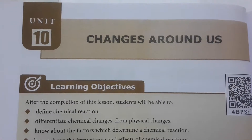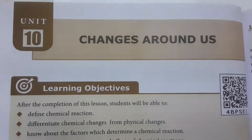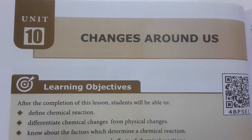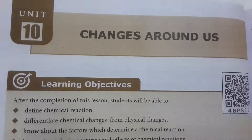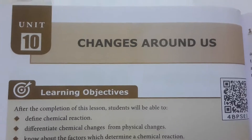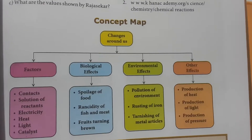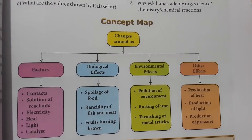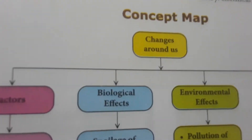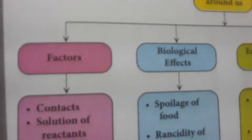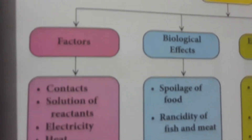Today we are going to see the book back evaluations from standard 8 Science book, Unit: Changes Around Us. This is a concept map for the lesson. The factors related to this topic are: